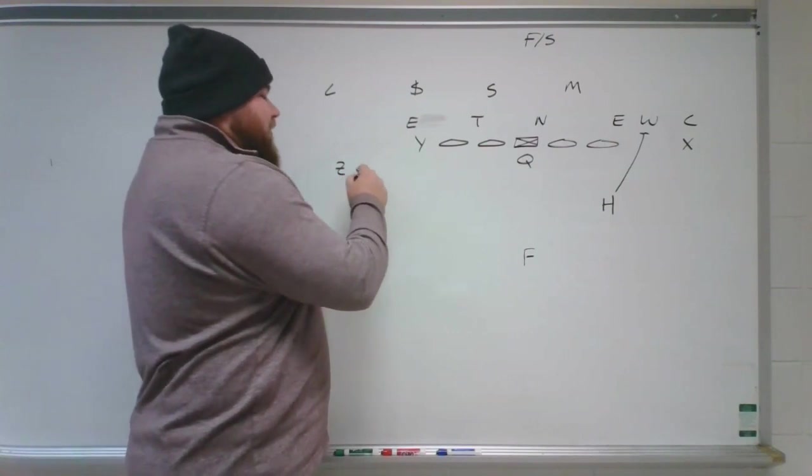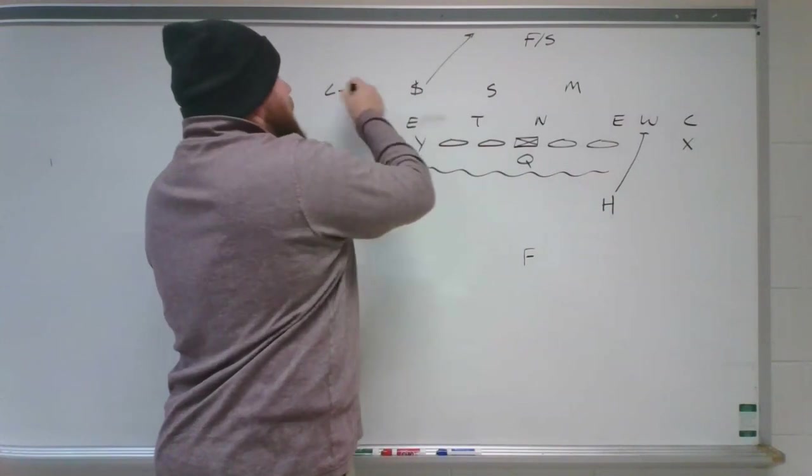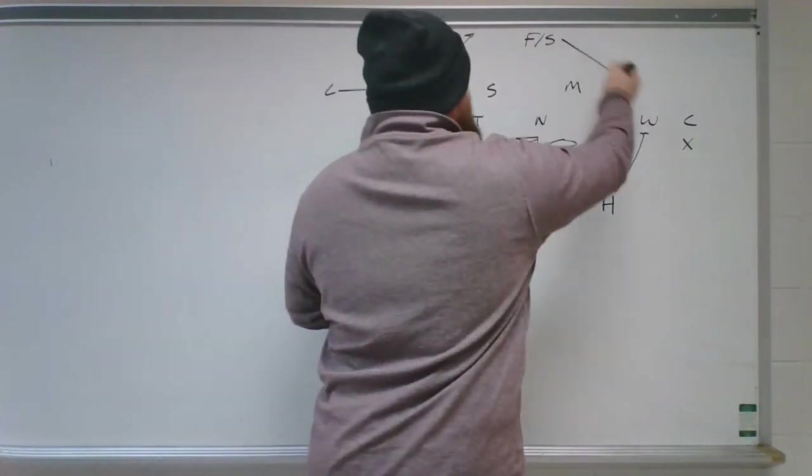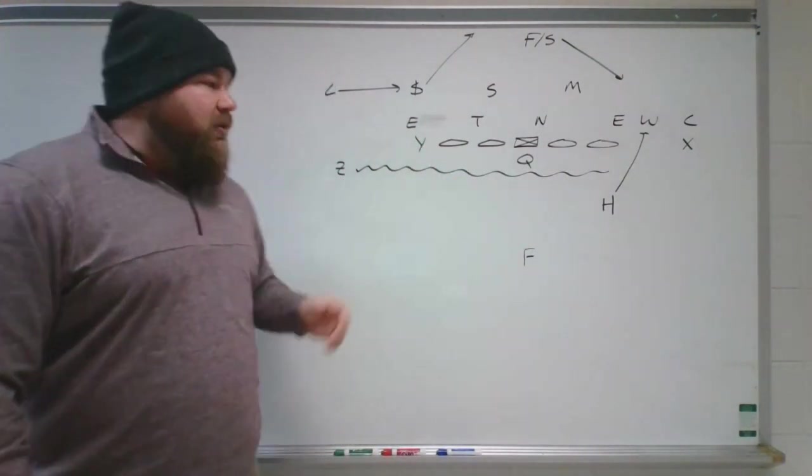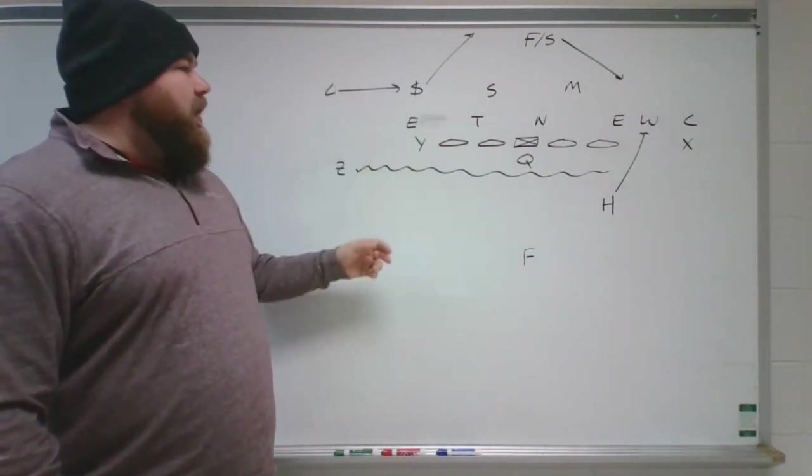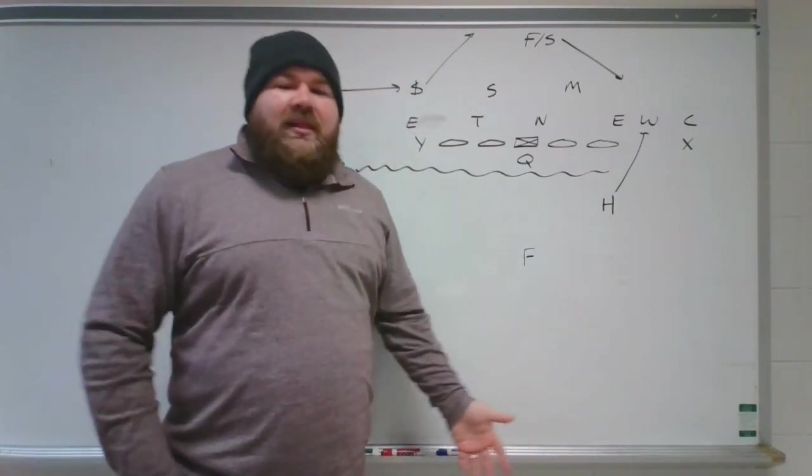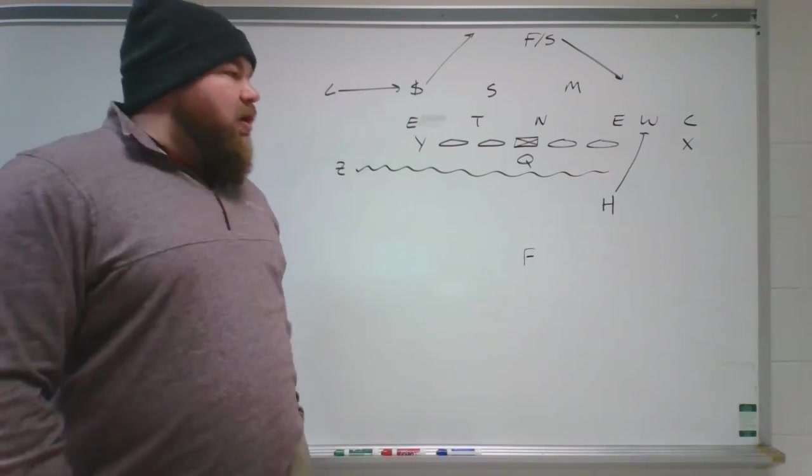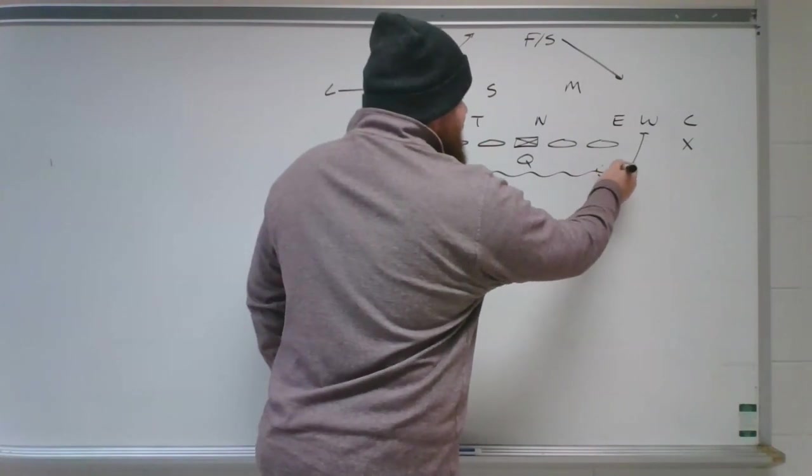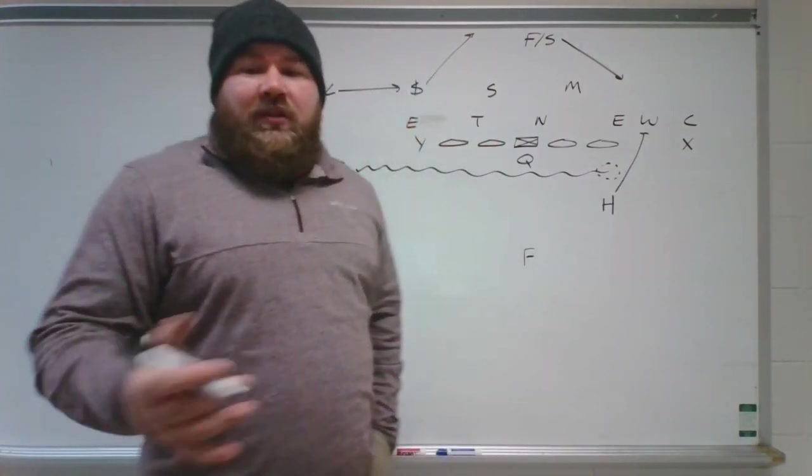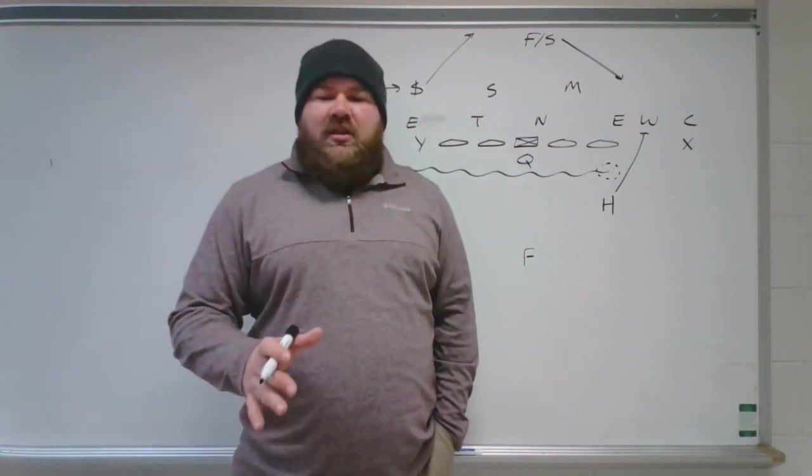They take the Z receiver and they motion him across until he gets to about here, and that means that they're going to do some rotations in their secondary. So they're bumping and rolling their coverages over, bumping the corner in, and strong safety up top, rolling the free safety down. So bumping like that means they're probably running some sort of a zone scheme, but they get the Z to line up essentially right here. So they've got actually two guys at the point of attack, which is really interesting, and they could do a lot of interesting things with it.